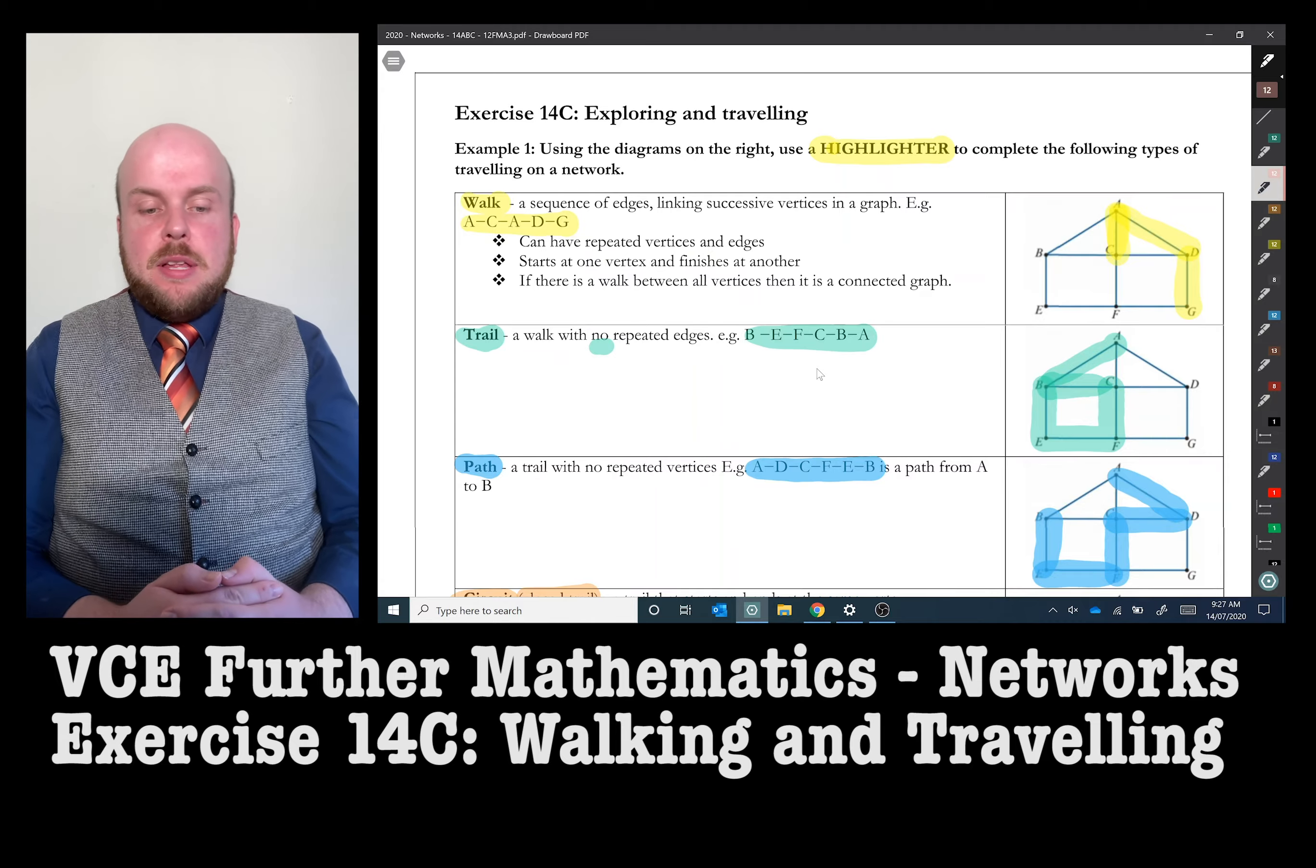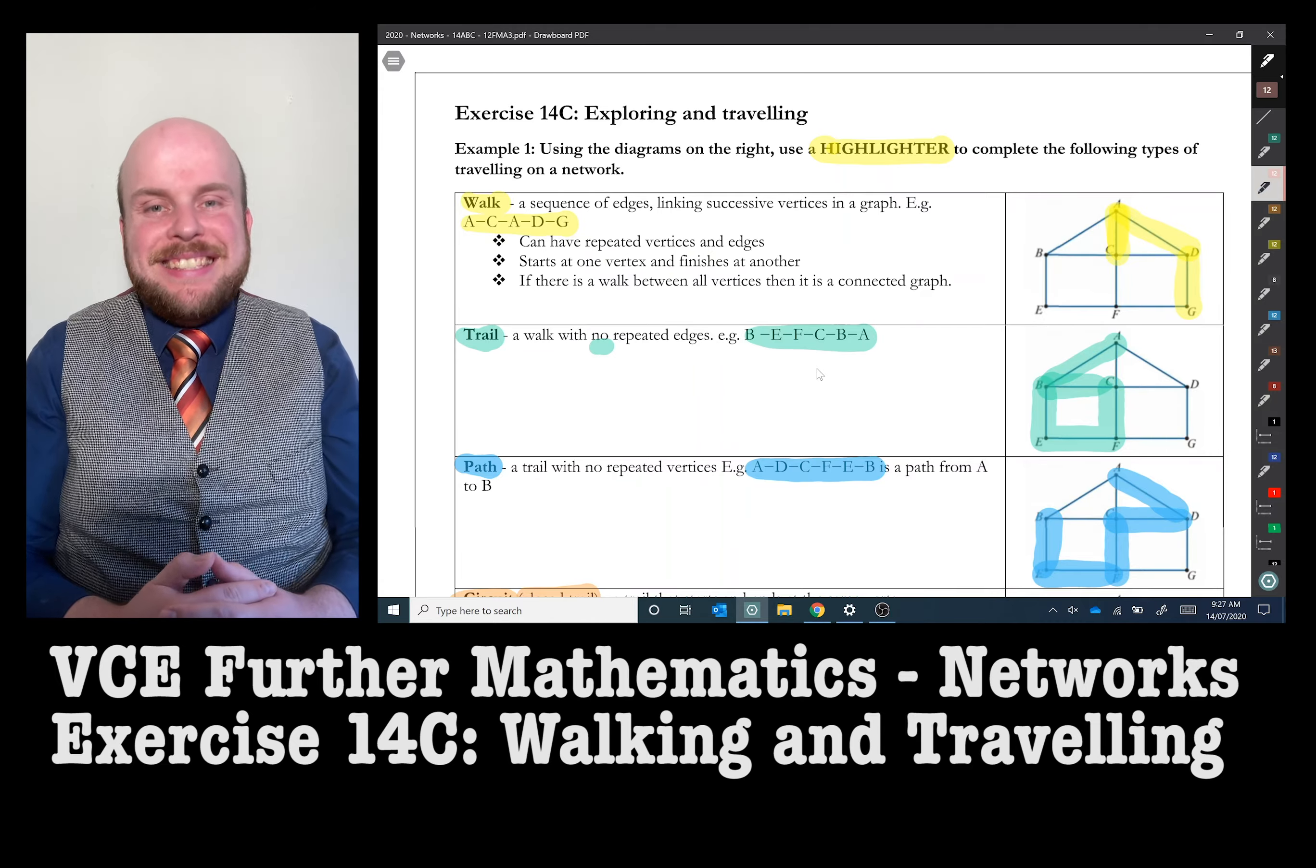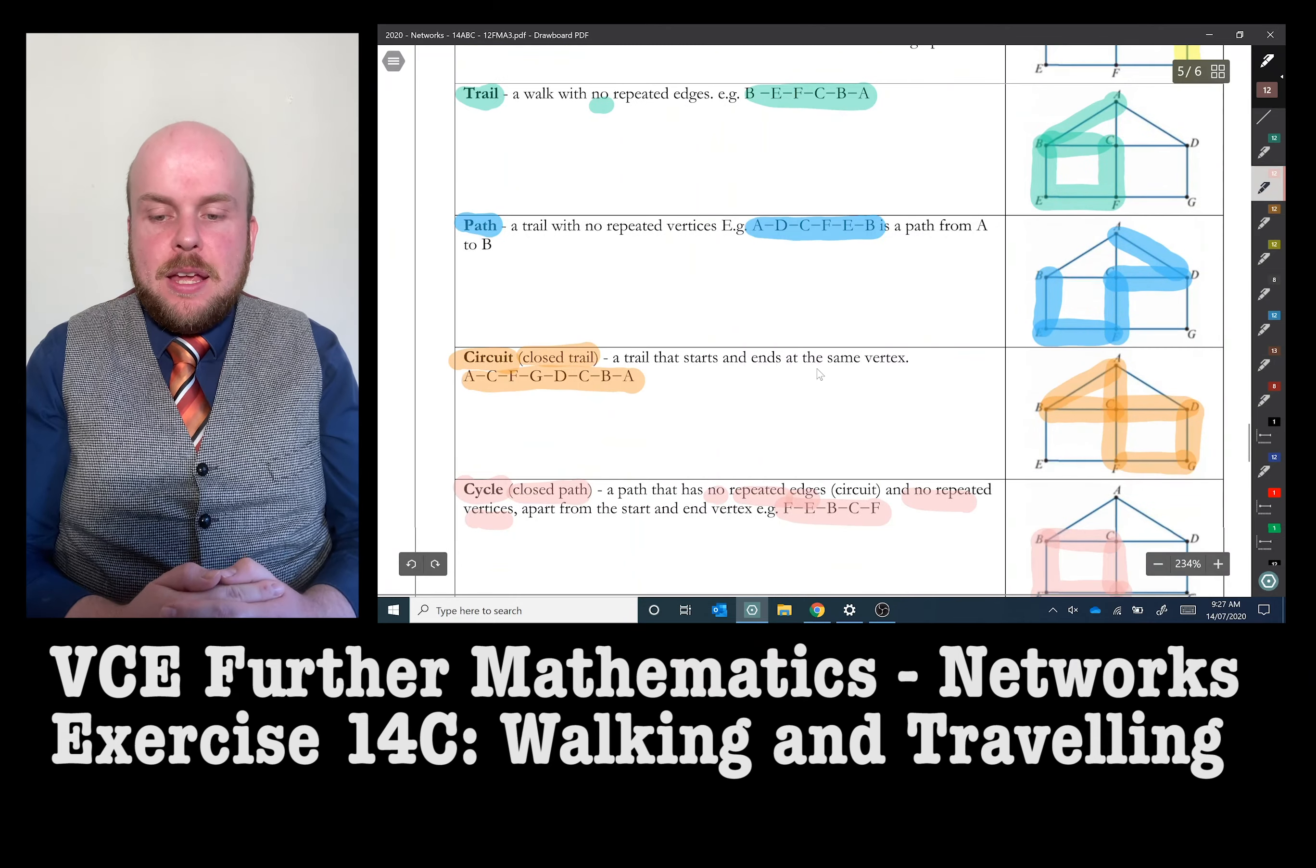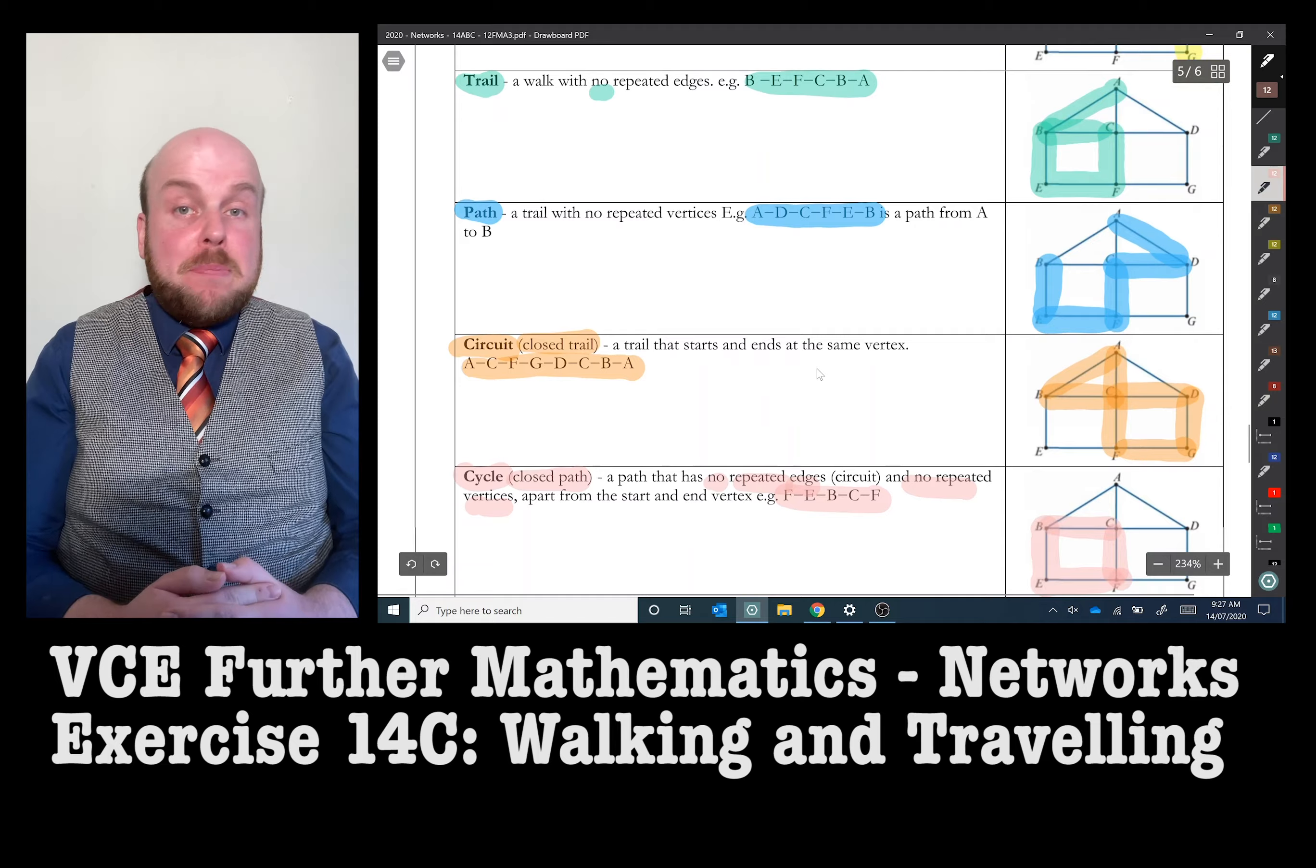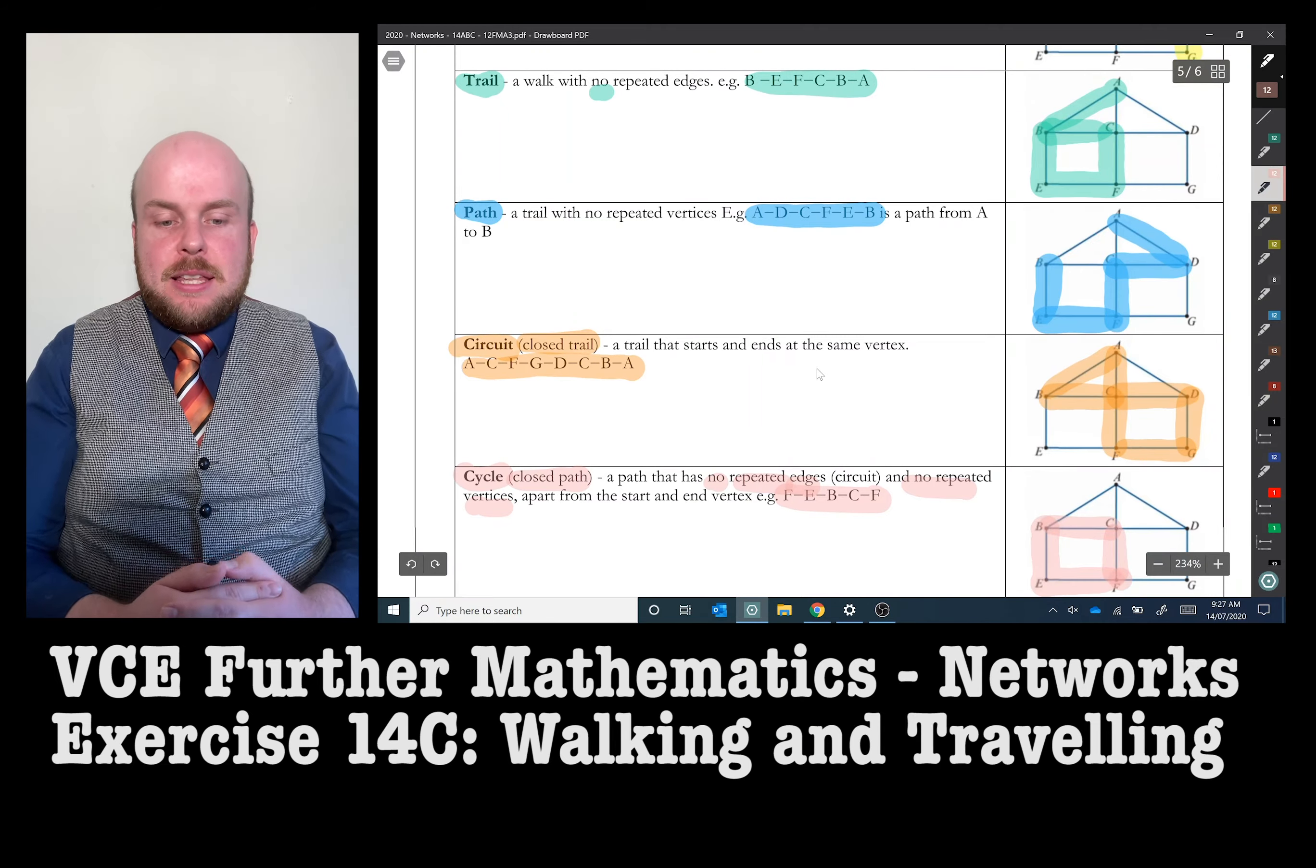In the first example here, I have an example of a walk. A walk is simply a sequence of edges linking successive vertices together. A walk can have any repeated edges, it can have repeated vertices, it's just me connecting any of those lines together.